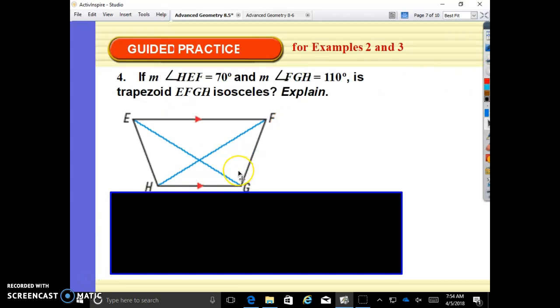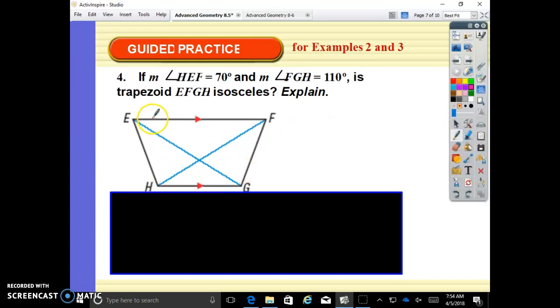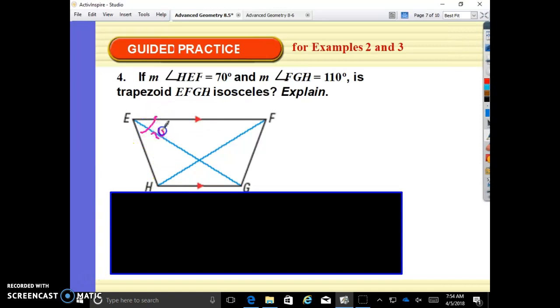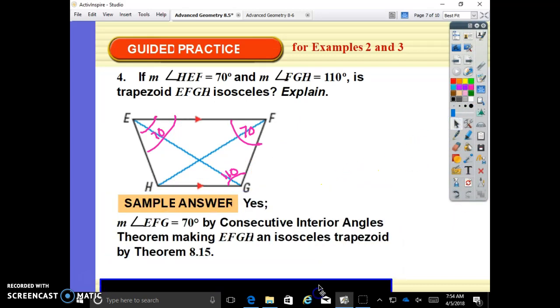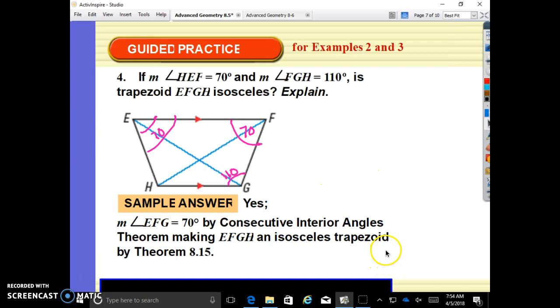If angle HEF is 70 degrees, right here, and FGH is 110. Is it isosceles? Explain. All right, well, these are parallel. So same side insides are supplementary. So this is 110. This has to be 70 to add up to 180. Base two angles are congruent. Therefore, it's an isosceles trapezoid. Angle EFG is 70 degrees by consecutive interior angles theorem. And now that the base two angles are equal, it is definitely an isosceles trapezoid by theorem 8.15.